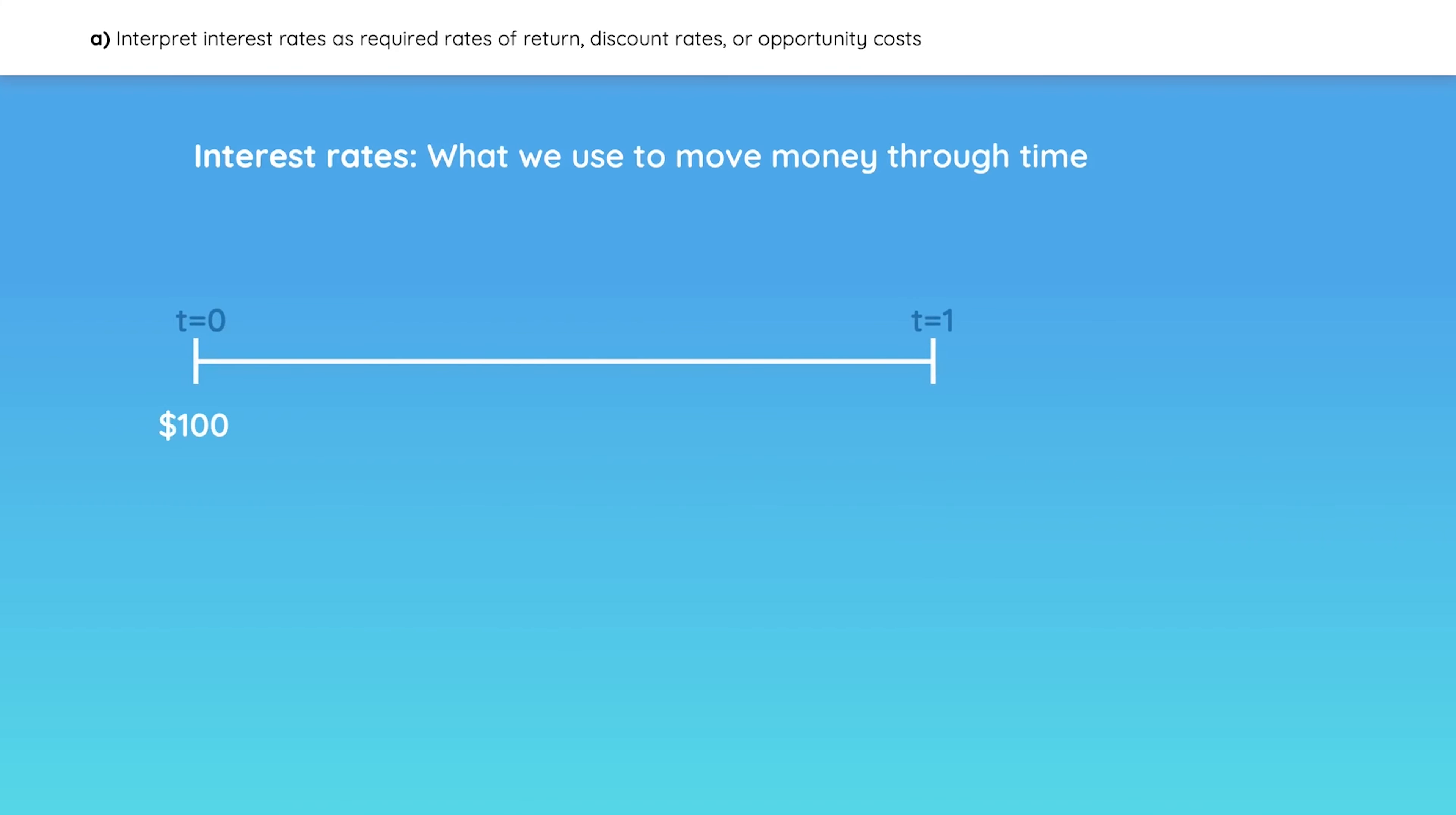Interest rates are what we use to move money through time. If you invest $100 today and want to make 10% on that investment, just multiply by 1 plus the required return. This gives us a future value of $110 in one year.